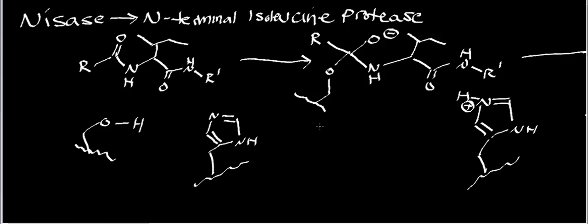Let's say you isolated an enzyme that targeted isoleucine residues and specifically targeted the N-terminal peptide bonds. You give it the name 'NiceAce' — 'N' from N-terminal, 'ice' from isoleucine, and 'ace' — because it targets the N-terminal peptide bond near isoleucine residues.